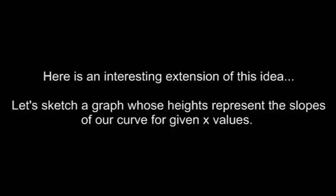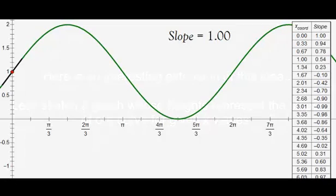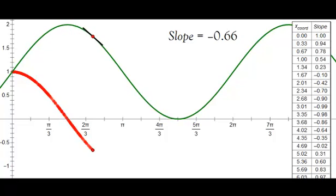Now here's an interesting extension of the idea. Let's sketch a graph whose heights represent the slopes of our curve for given x values. So as we move along, my slopes are positive. So I'm plotting height values that are positive, but they're getting less positive because my slopes are getting less positive. Then my slope hit zero, so that's why I have an x-intercept there. And then my slopes are getting negative and more and more negative, so my height values are getting negative, more and more negative, and so forth.